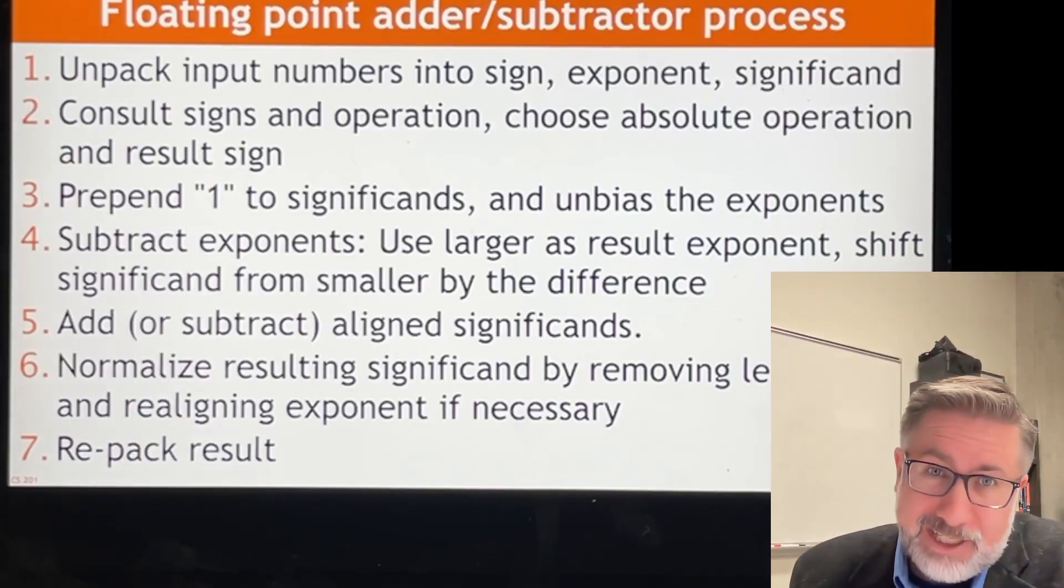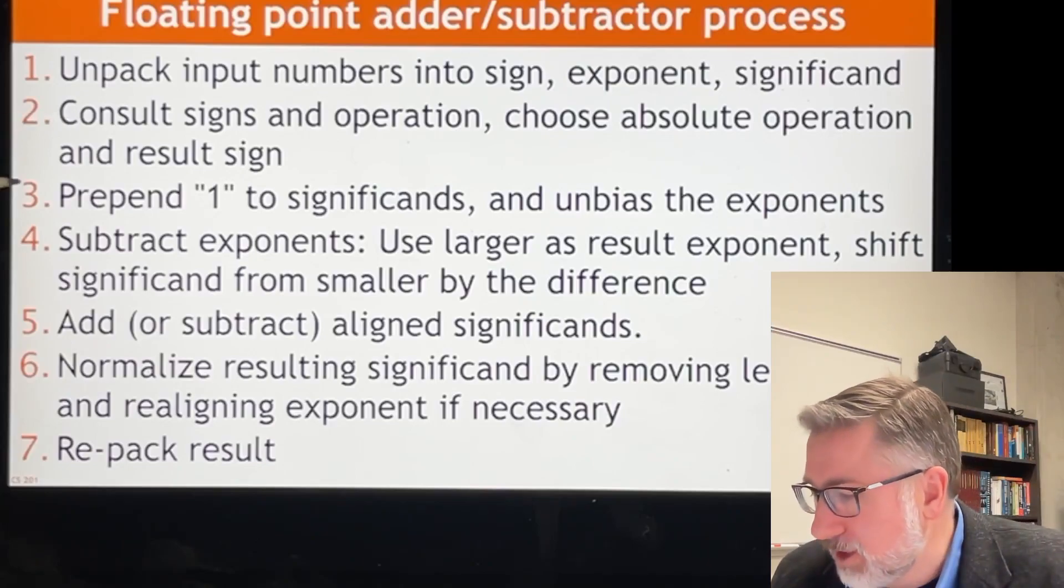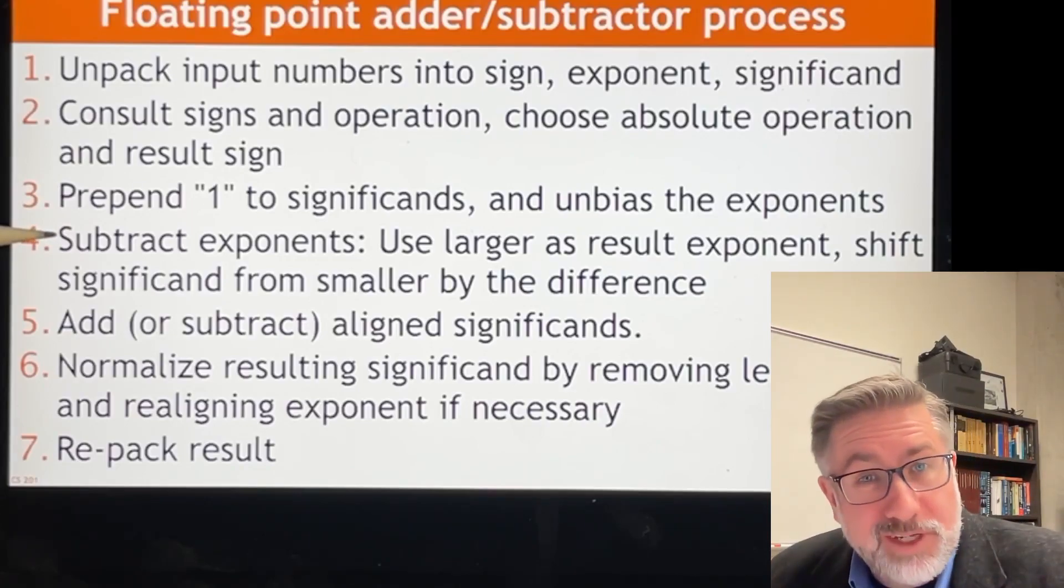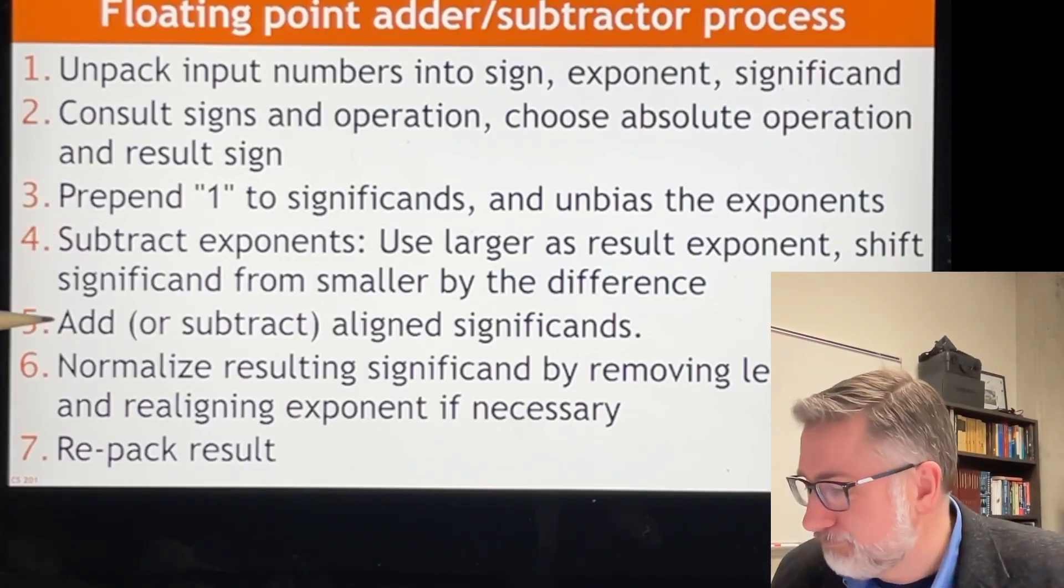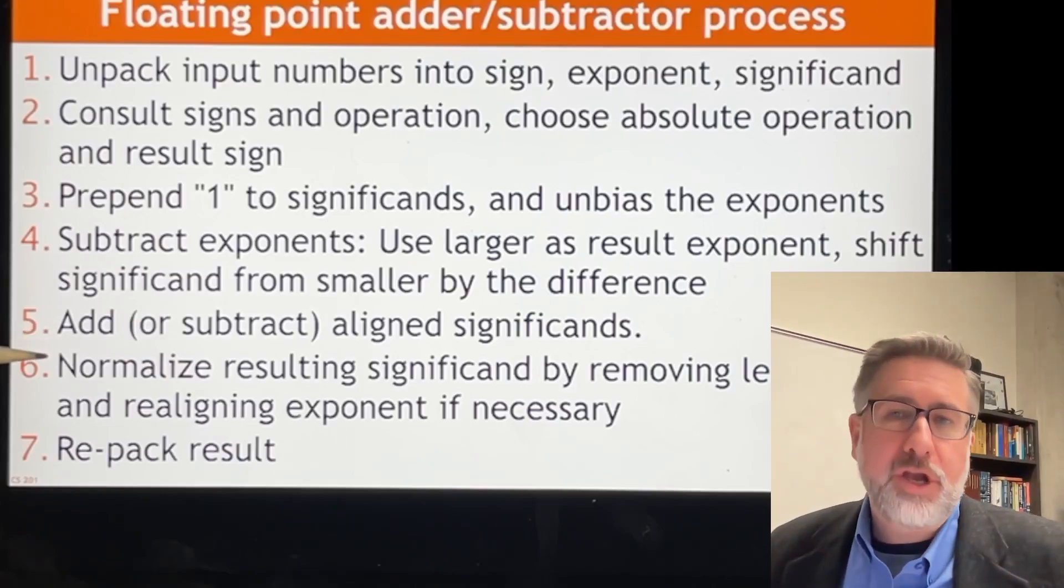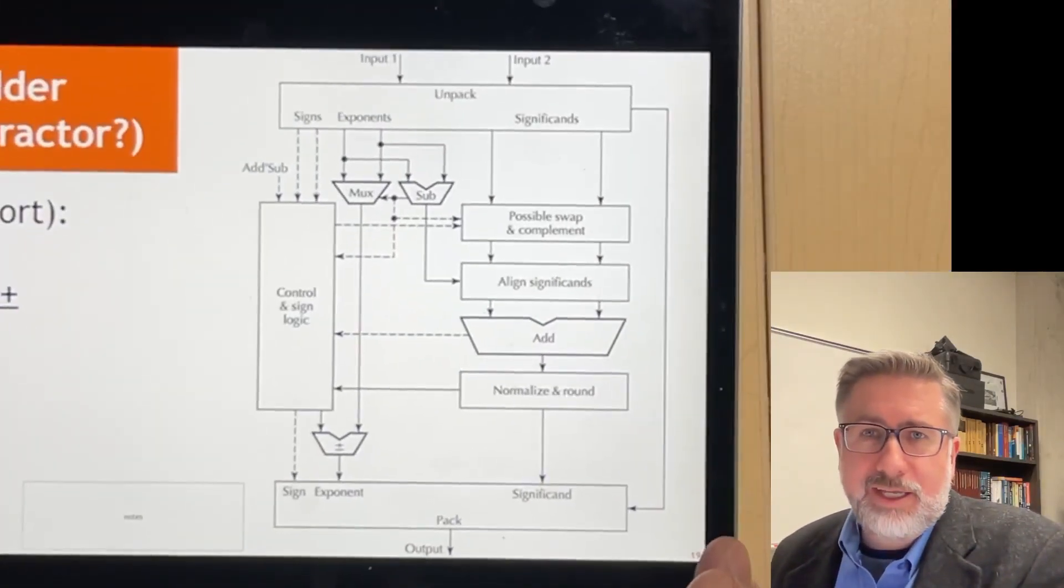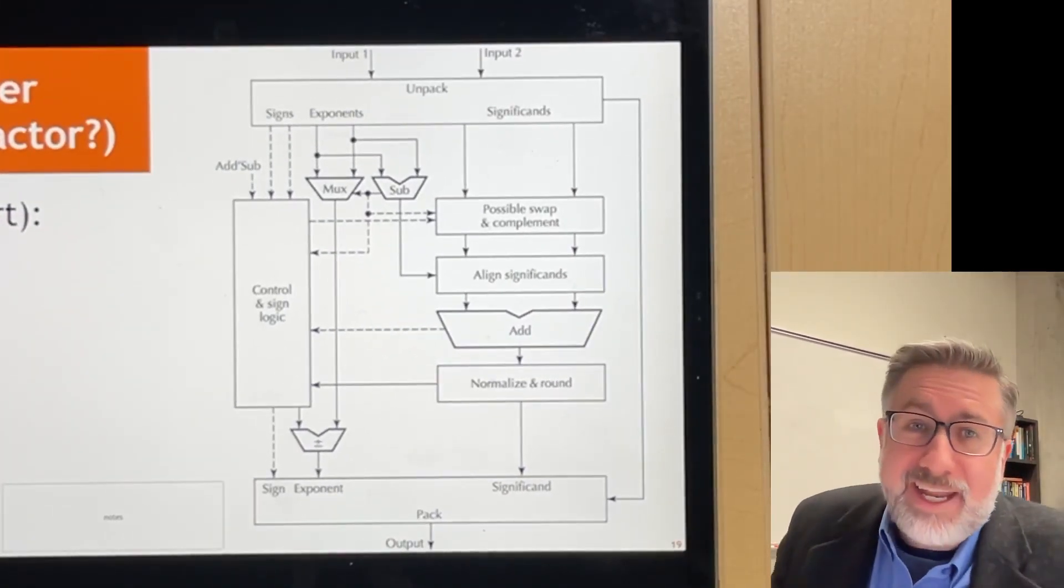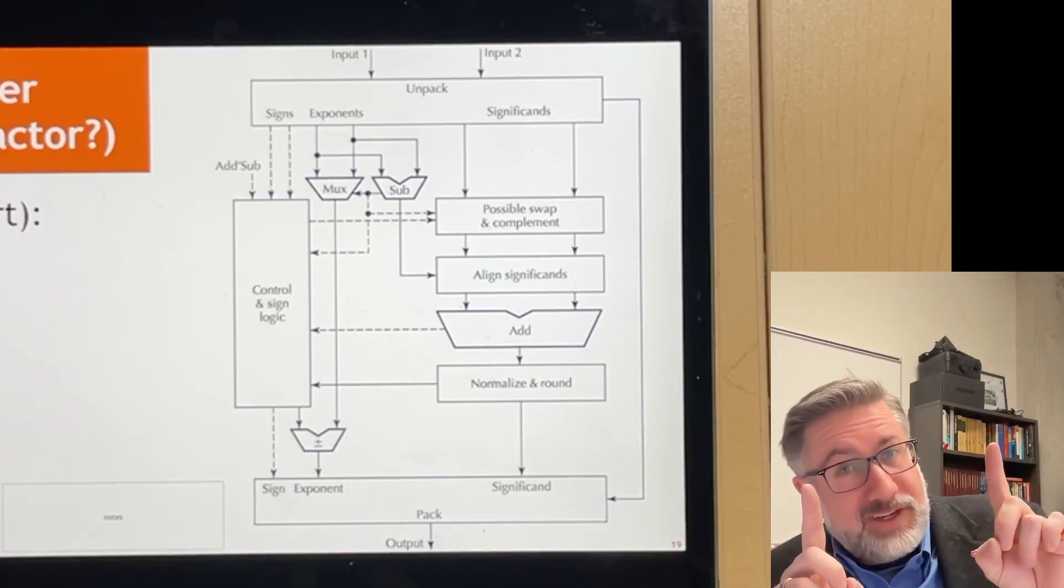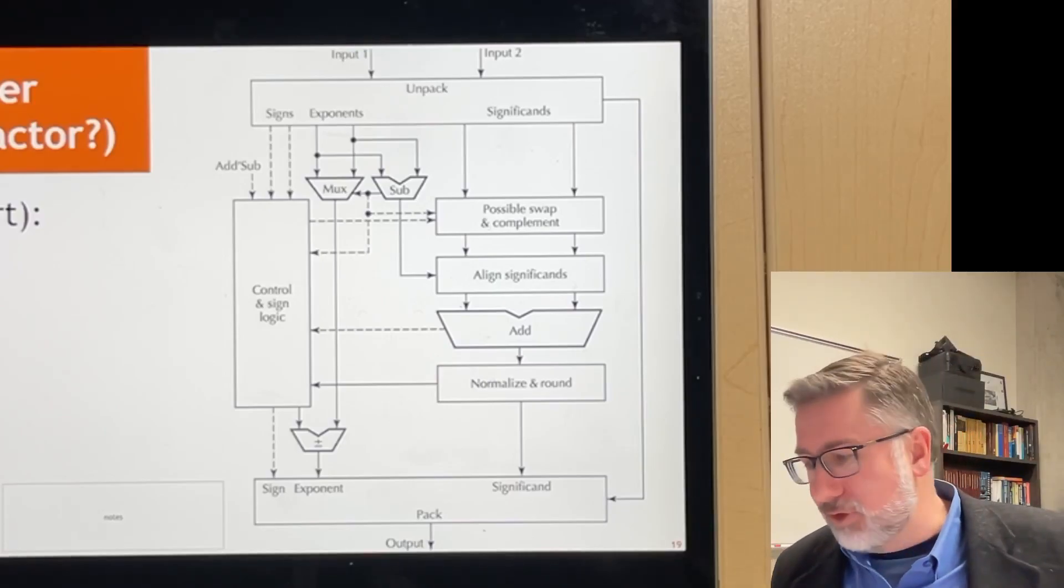So let me show you now, and you're going to love this, the full hardware for adding and subtracting two numbers. Here's the whole process. Come back and look at this process if you want. Again, we're going to unpack. We're going to check the signs in the operation to see what we're actually doing. Then we're going to add the one from the normalized representations. We're going to check the exponents, figure out which one we have to shift by how much. We're going to add or subtract the aligned significands, right? We're going to do the actual operation. We're going to normalize and realign and then repack the result, put it back in. And this is what the hardware looks like. It is a beast, right? You think about adding two integers. This is all you need. It's just an adder, right? Because you know that the place values are the same, but now we have the situation where we don't know if the place values are the same.